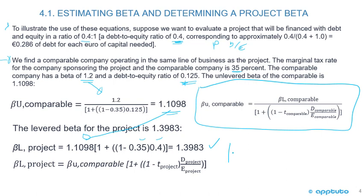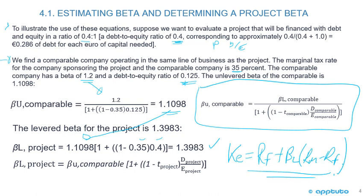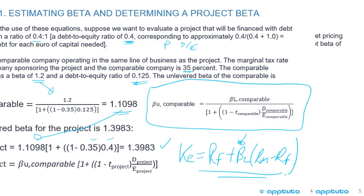That levered project beta is important because we can then calculate the cost of equity using the CAPM: risk-free rate plus the project's levered beta times the market return minus the risk-free rate. That gives us the cost of equity. We've successfully calculated a project beta.